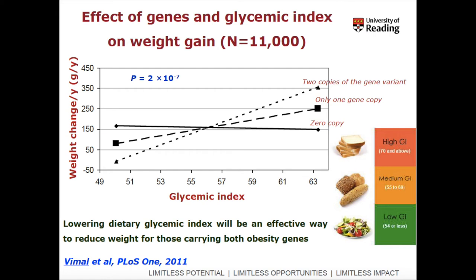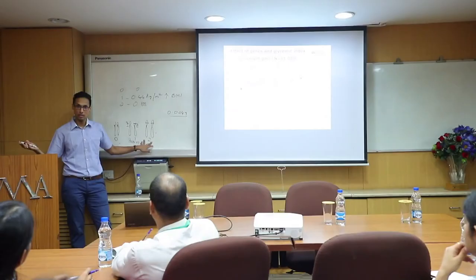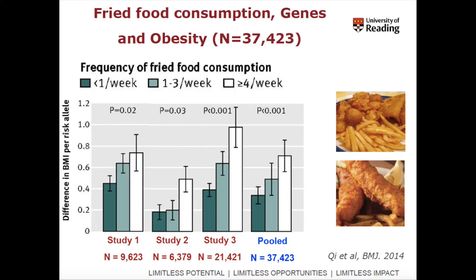What is the conclusion? Whenever you make a conclusion, think about the people who are at higher risk — people with two copies. Zero copies are already protected. For a public health message, the conclusion should focus on those at higher risk: lowering the dietary glycemic index will be the effective way to reduce weight gain for people who carry two copies of the obesity gene variation. The glycemic index was calculated based on dietary intake information collected using a food frequency questionnaire — it was not an intervention study.